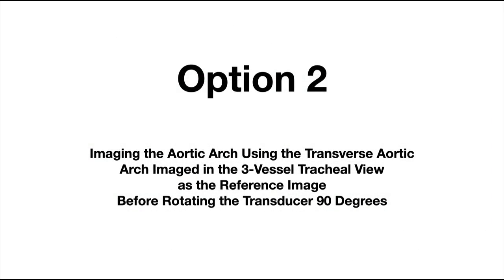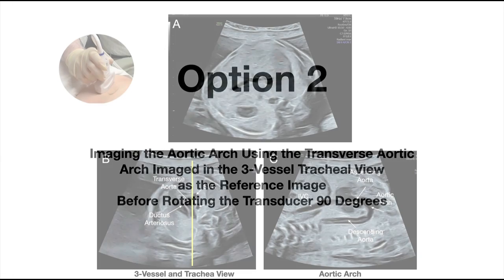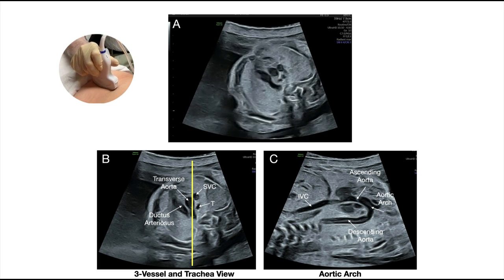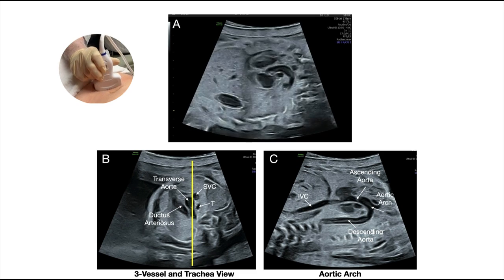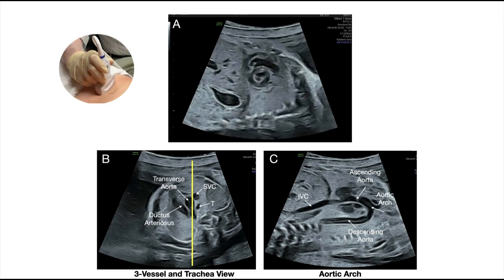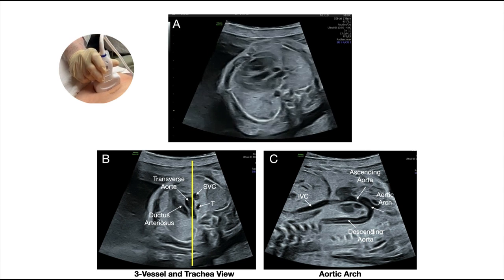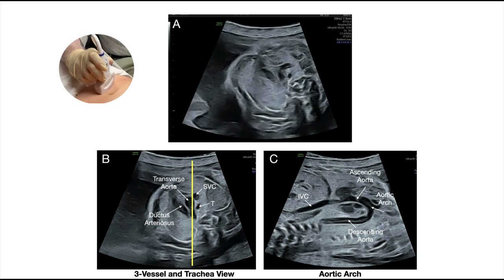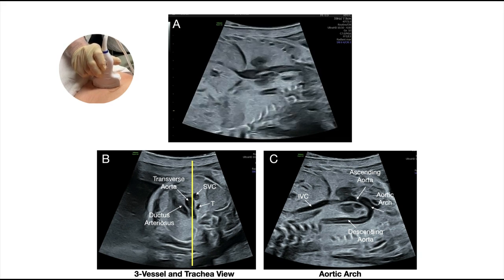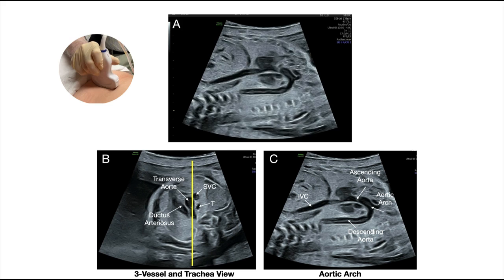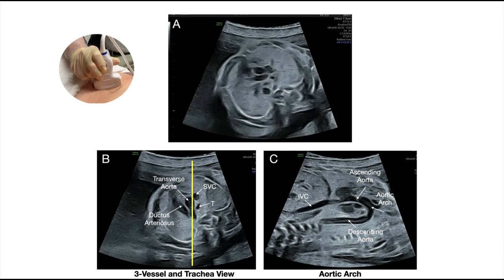Option 2: imaging the aortic arch using the transverse aortic arch imaged in the three-vessel tracheal view as the reference image before rotating the transducer 90 degrees. The video clip illustrates Option 2 in which the transducer is rotated 90 degrees from the transverse arch to image the full aortic arch. To accomplish this, the examiner first identifies the four-chamber view when the ventricular septum is perpendicular to the ultrasound beam. The transducer is then directed towards the fetal head in a transverse plane until the three-vessel and trachea view is identified. Once identified, the transverse aorta should be parallel to the ultrasound beam. The transducer is then rotated 90 degrees to image the aorta, as illustrated in Figure C.